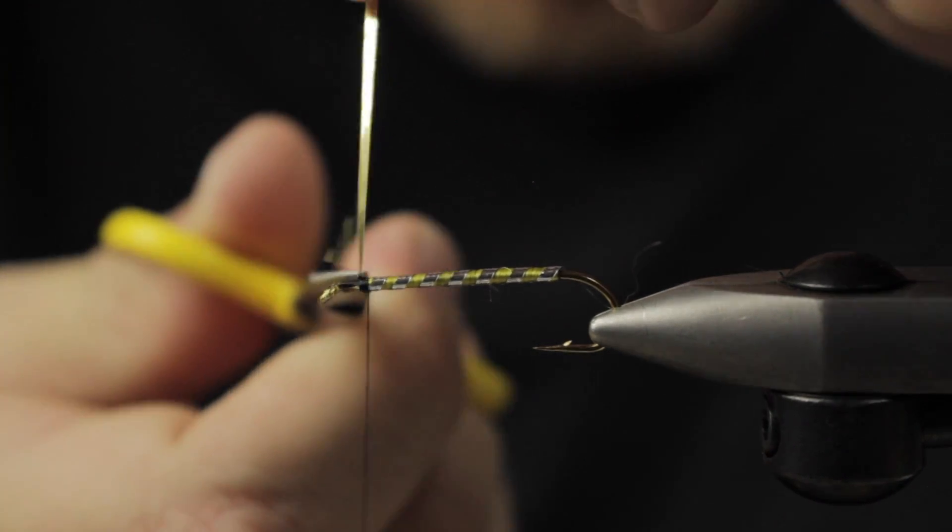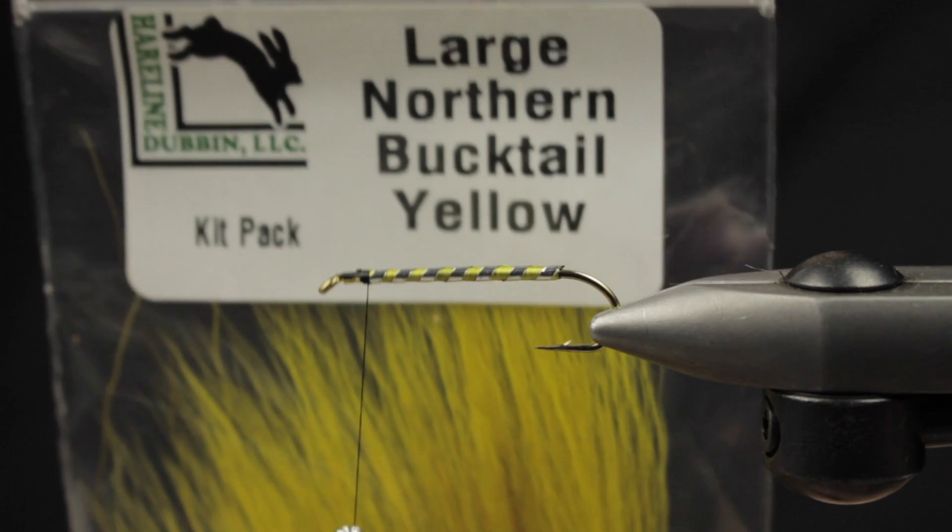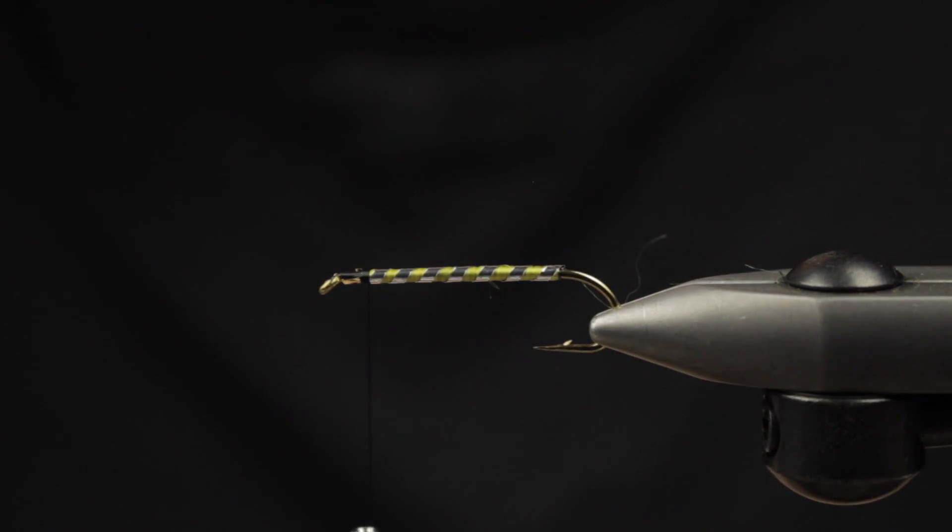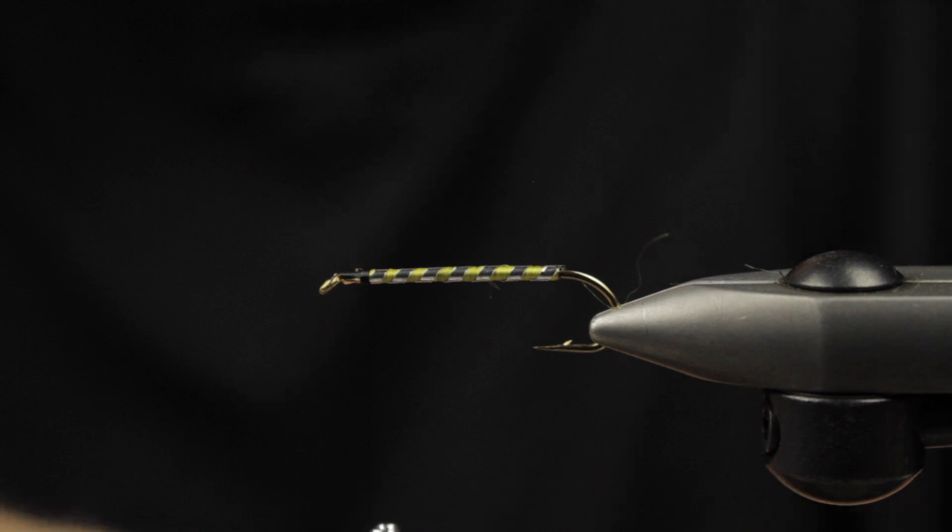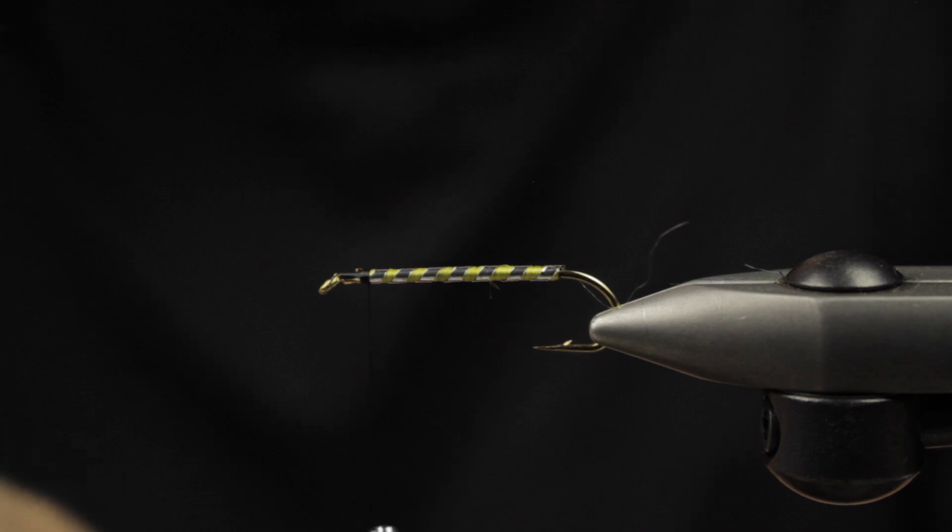We'll go ahead and take off our extra tinsel and bring in some yellow bucktail. I'm not going to go too heavy with the bucktail—it's a pretty dainty streamer by today's standards. We'll probably get about a sixteenth of an inch of bucktail and try to keep the tips somewhat even if possible.